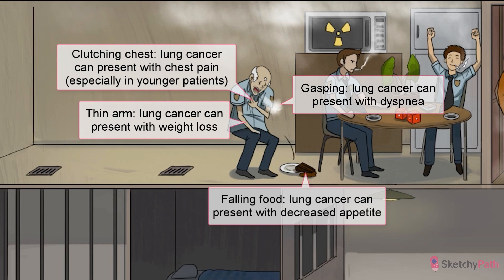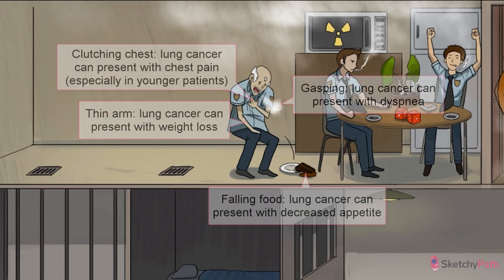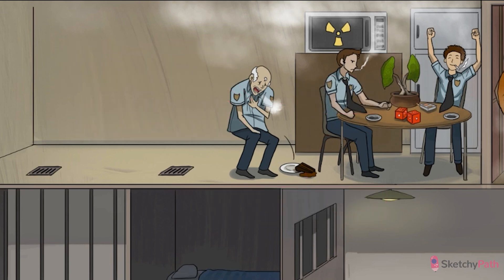Patients with lung cancer classically present with progressive dyspnea — see how out of breath that guy is — and weight loss, as evidenced by his ridiculously thin physique, decreased appetite, hence the food tray falling to the ground, and chest pain, especially in younger patients.